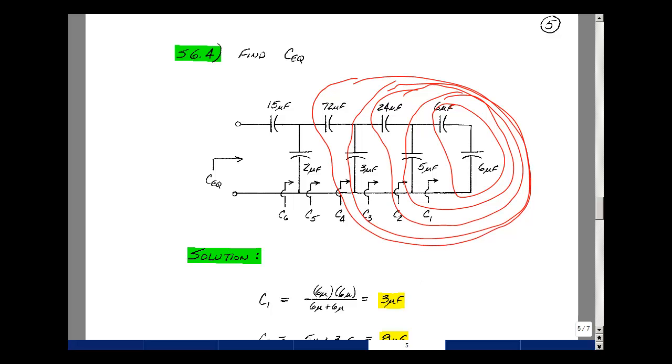So that's 8 microfarads looking back. That's in parallel with 2 microfarads, so that'll be 8 plus 2 or 10 microfarads. And then lastly, that's in series with 15 microfarads. So the product over the sum would be 15 micro times 10 micro over 15 micro plus 10 micro, and that's 6 microfarads.